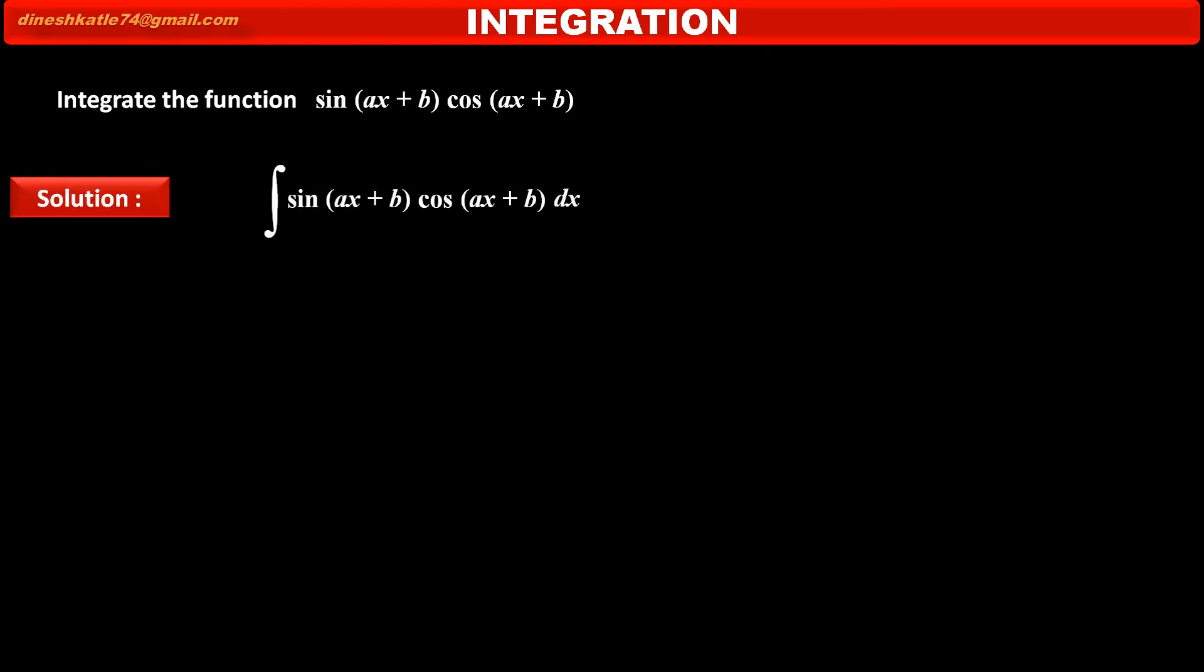As the given function is integration of sin(ax+b) into cos(ax+b), this function has two factors, two trigonometric factors. One is sin(ax+b), other is cos(ax+b). Both have same angles ax+b.